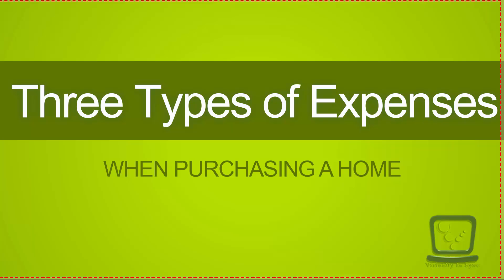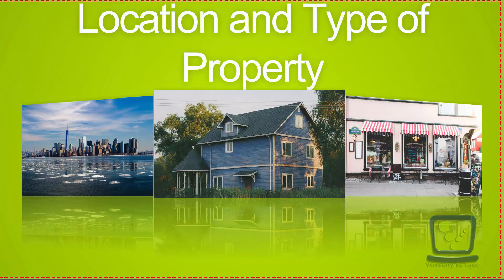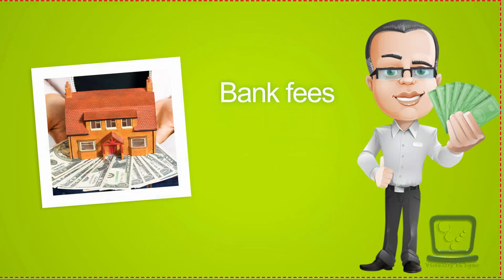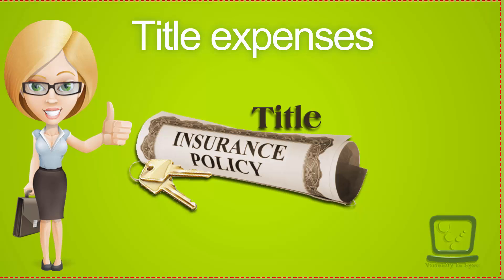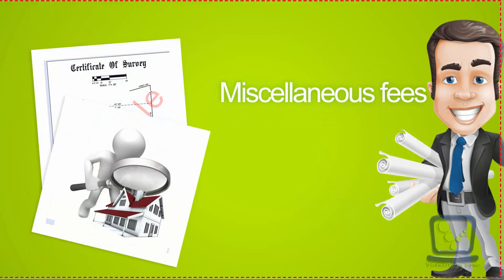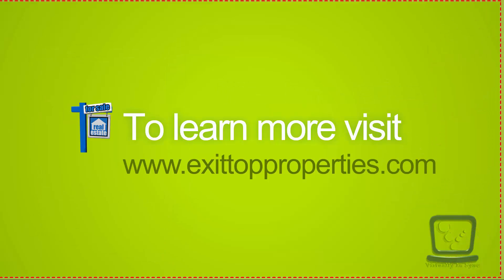There are usually three types of expenses purchasers will find when buying real estate property. The costs involved for these types of services will vary broadly and are based on location, type, and kind of property. As a purchaser, if you work with a bank or mortgage company, they will give you a good faith estimate within three days of submitting your loan application. Bank fees will vary with respect to the loan program but can consist of title expenses, which can include title search and insurance, closing costs such as attorney's fees, and miscellaneous fees like property taxes, homeowner insurance, home inspection, appraisal, and surveys. Learn more by going to exittopproperties.com.